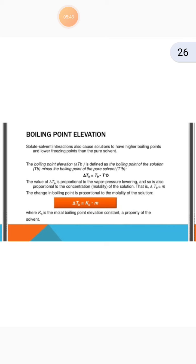Now the next topic is boiling point elevation. Solute-solvent interactions also cause solutions to have higher boiling points and lower freezing points than the pure solvent. The boiling point elevation ΔTb is defined as the boiling point of the solution Tb minus the boiling point of the pure solvent T°b: ΔTb = Tb − T°b. The value of ΔTb is proportional to the vapour pressure lowering and also proportional to the concentration of the solution.